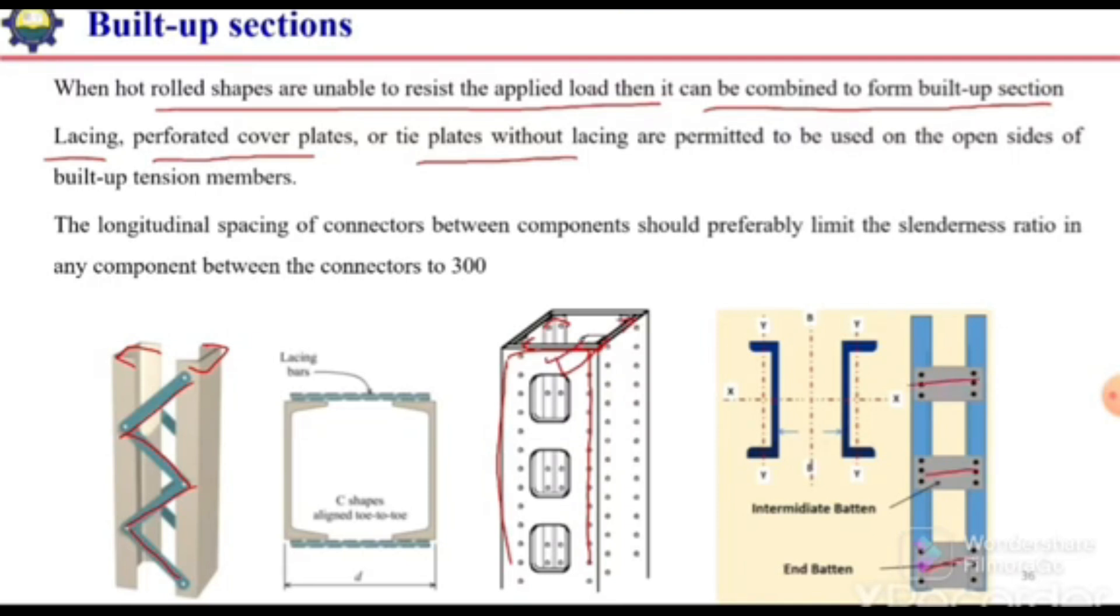Or we can use side plates, end battens, or intermediate battens to connect these two shapes—these two channels—to make a built-up section. The spacing of these connecting members should be decided such that the slenderness ratio of each individual component is less than 300.